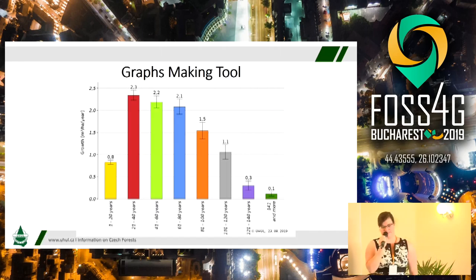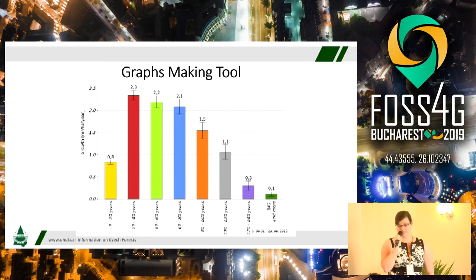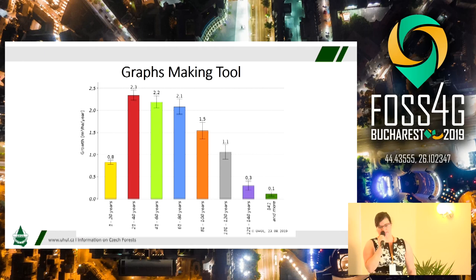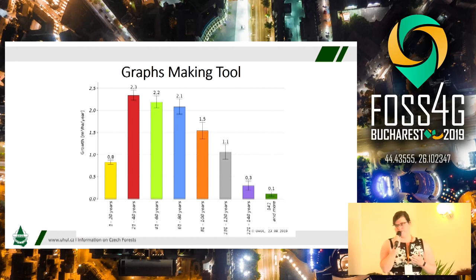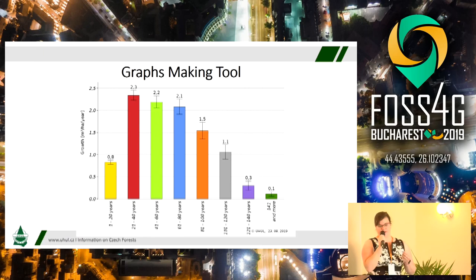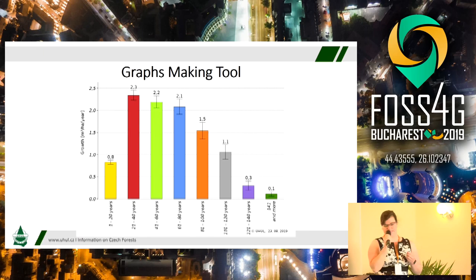Here is the resulting graph. This graph shows growth on the Y-axis, and the X-axis shows age categories. The growth is divided into age categories so that you can see the distribution. This graph is for the whole Czech Republic, and you can see that the highest amount of growth is in the age category 21 to 30 years, after which it is slightly decreasing.